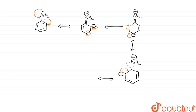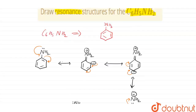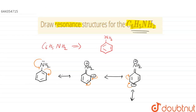The electrons shift once more and we get back to the original structure of C6H5NH2. These are the resonating structures, and together they represent the resonance structures of C6H5NH2.